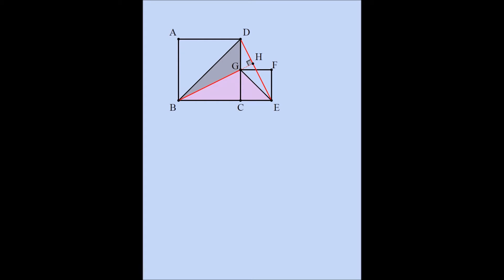Let's shade triangle BGD gray and triangle BGE pink. The area of triangle BGD must be c × DH / 2, because the area of any triangle is given by the product of the height and the base times one half. We are considering BG as the base of triangle BGD, which is c units long — that was our assumption — and this is the base and this is the height of triangle BGD.